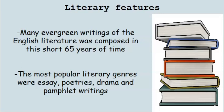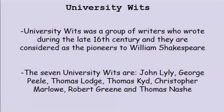An important concept you must know about is the University Wits. University Wits was a group of writers who wrote during the Elizabethan period. This group consisted of seven writers: John Lyly, George Peele, Thomas Lodge, Thomas Kyd, Christopher Marlowe, Robert Greene, and Thomas Nashe. They were all highly educated and there were many similarities between their writings.